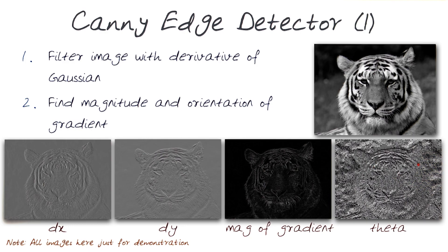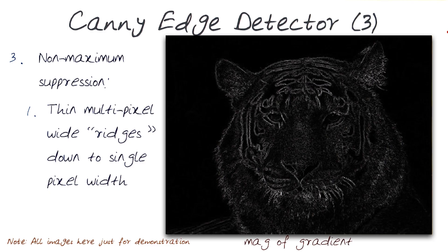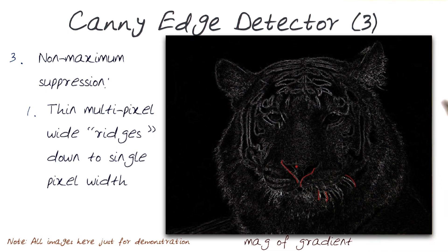So those are the first two steps. The third step of computing edges is taking this magnitude and doing some local processing to enhance the edges. In the Canny edge detector, what is done is non-maximum suppression, which is all about thinning the multiple pixels. There are lots of pixels right next to each other, and we reduce these into a single pixel width.